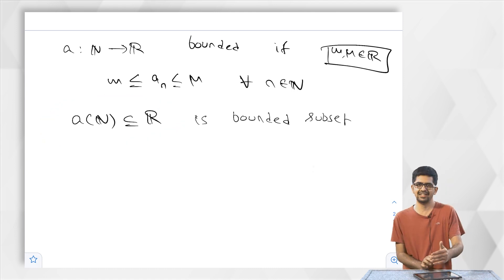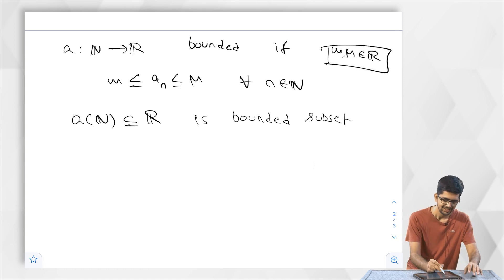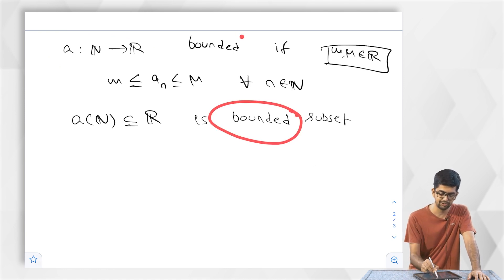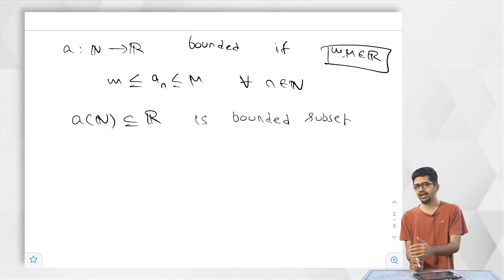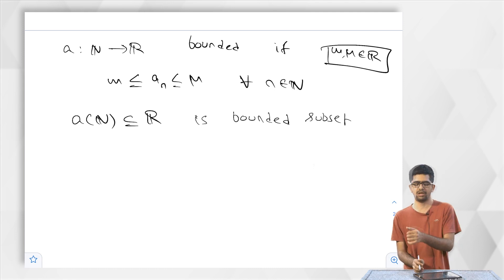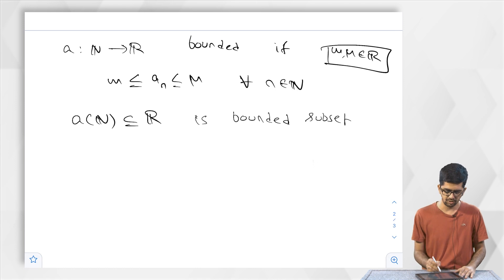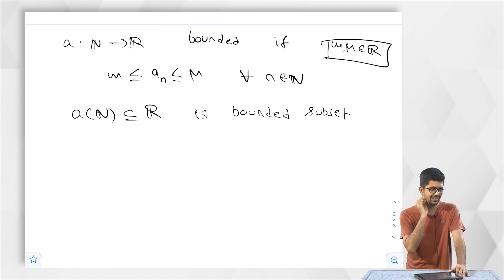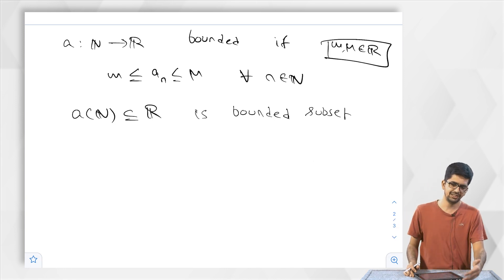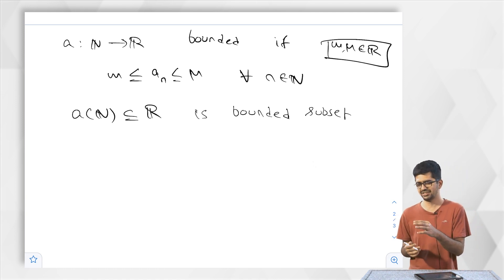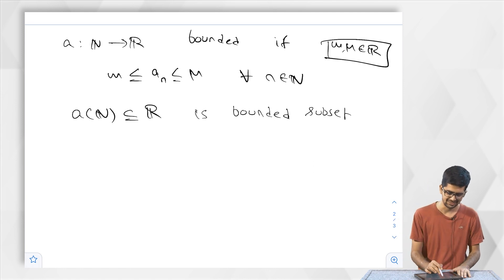This does not hold for the other classes. Just by looking at the image of the sequence, we are giving it the name 'bounded sequence,' but this will not work for Cauchy, convergent, or monotone sequences. The image of a sequence does not determine those three properties — only for bounded sequences does this situation hold. We will see examples where the image is very nice but the sequence is not Cauchy, convergent, or monotone.